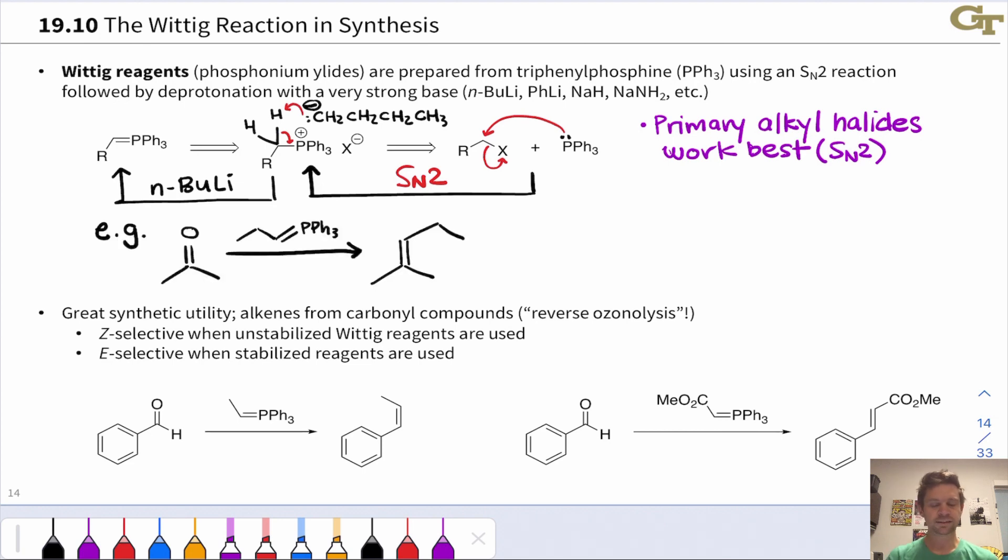In synthetic schemes you may see this represented a couple of different ways. You may just see the phosphonium ylid written above the arrow with this SN2 reaction and treatment with a strong base sort of implied.